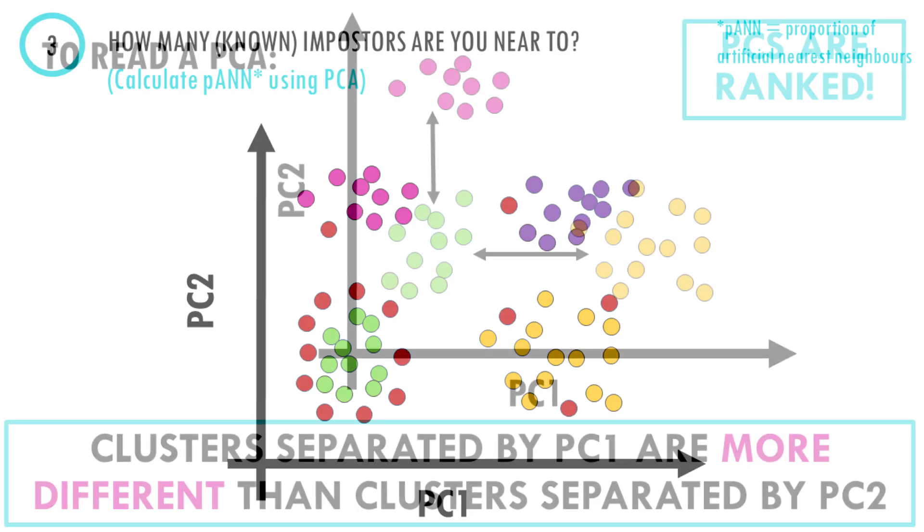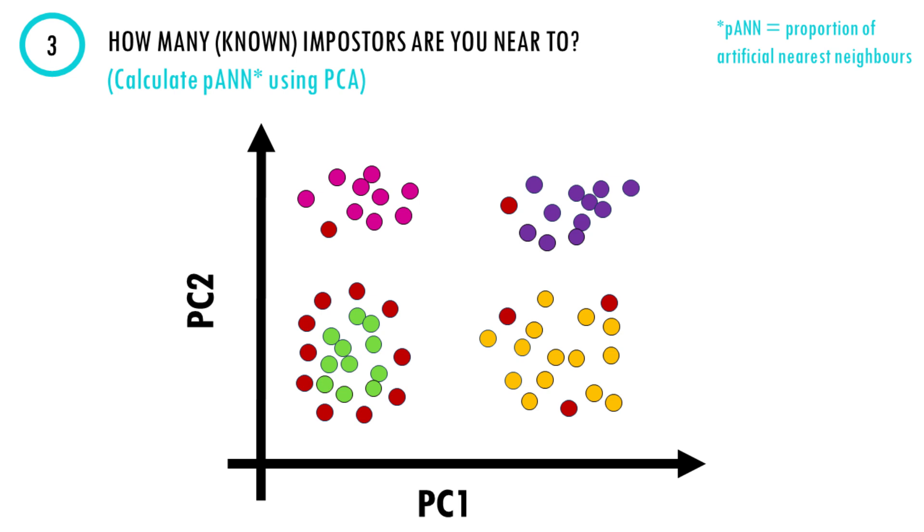DoubletFinder uses PCA to find each cell's proportion of artificial k-nearest neighbors in a parameter called pANN. So for example, this cell here has 20 nearest neighbors and 10 of them are artificial doublets. So its proportion of artificial k-nearest neighbors is 10 divided by 20, or 0.5. That is step three. It will compute this value for each of the cells.